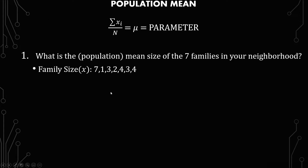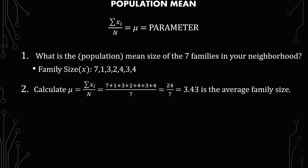The family sizes in your neighborhood are 7, 1, 3, 2, 4, 3, and 4. So how would you go about calculating that using the formula? This is what it looks like. You have mu for the parameter, the summation of xi over capital N. You have the numbers all added up, and then you divide by the number of families that you have, which is 7.